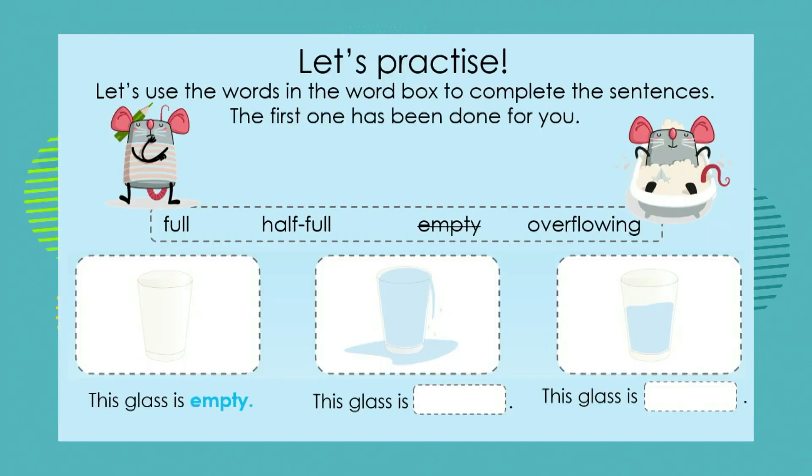Let's practice. Let's use the words in the word box to complete the sentences. The first one has been done for you. If we look at the picture, the glass is empty — there is no water in this glass, so we can see that they have crossed out the word empty.